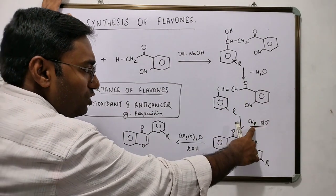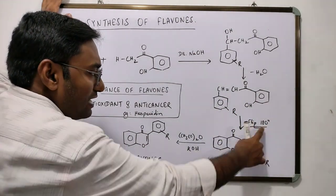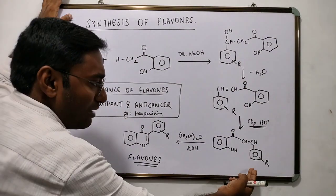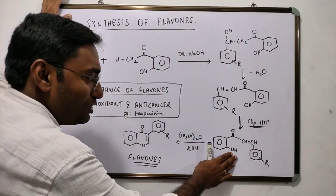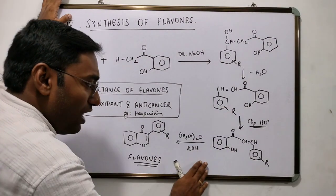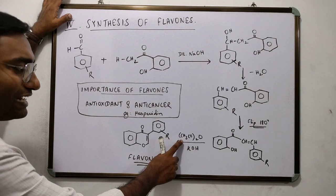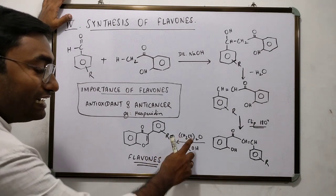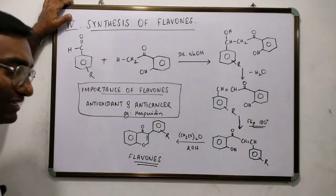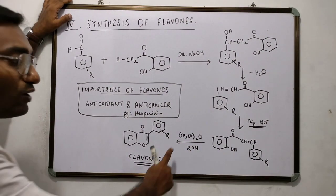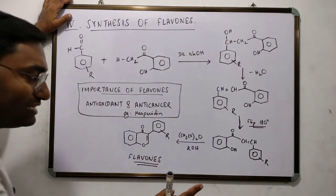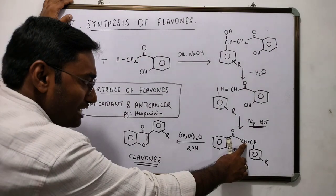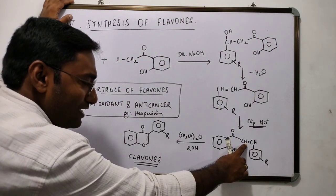I flip this molecule to 180 degrees such that this portion comes here and this portion comes here. This is the same molecule, and now I treat it with acetic anhydride in the presence of KOH. This acetic anhydride acts as a dehydrating agent and also an oxidizing agent. It does three things: it removes the OH⁻ from here and H⁺ from here, leading to the formation of water.